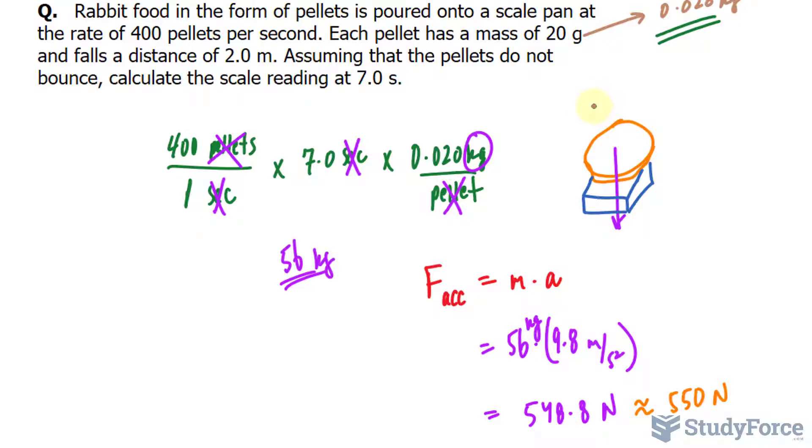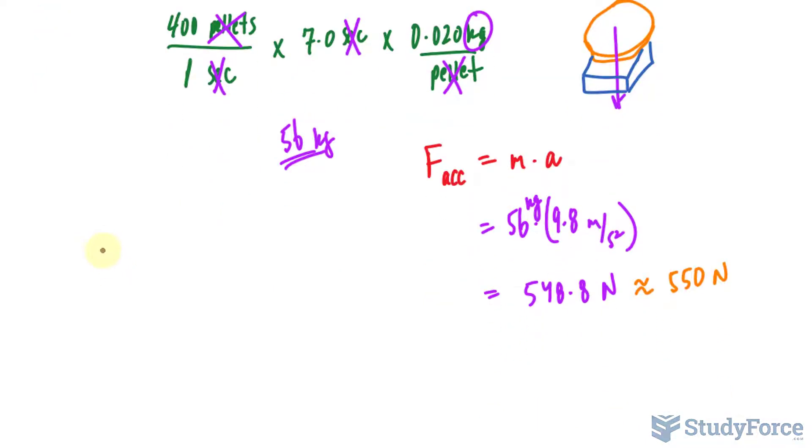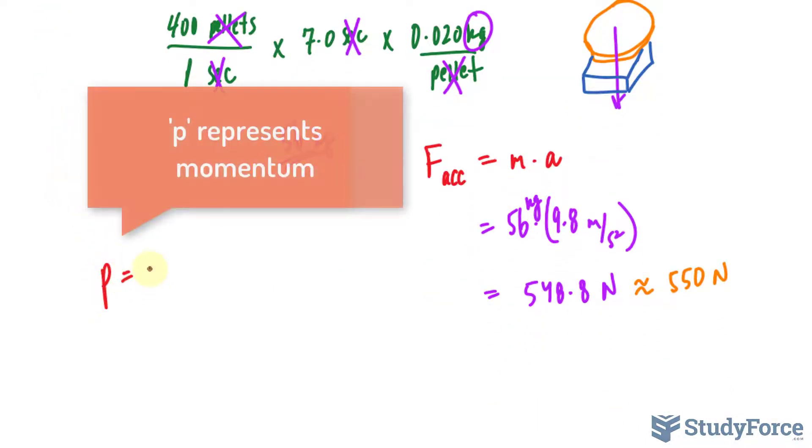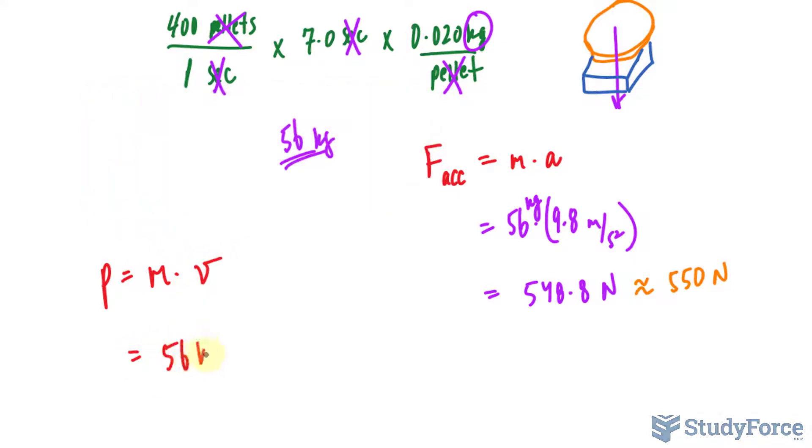Alright, so that's the force as these pellets accumulate onto this pan. The next force that we need to calculate is the force due to the momentum of these pellets falling. Remember that to calculate momentum, we use the formula P is equal to mass times the velocity.